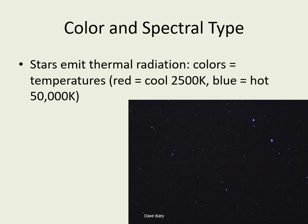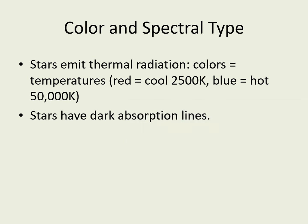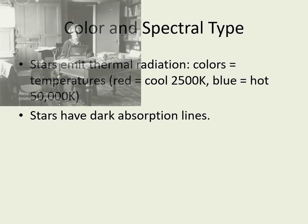In the early 19th century, astronomers started noticing that the spectra of stars displayed dark lines, which we now know are absorption lines. By the end of the century, they were classifying stars by the patterns of lines they were seeing, using the letters A, B, C, etc. to name the different kinds of spectra.